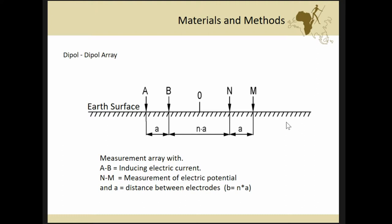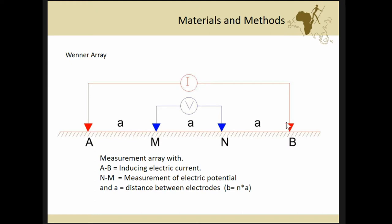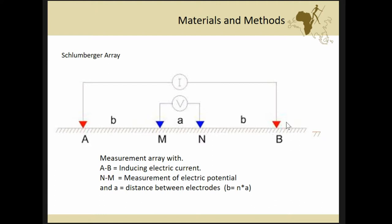So there are different arrays as I said before. So the Dipol-Dipol array is characterized, we have two electrodes where you have the induction of the electric current and you have two electrodes where it is measured. Then the typical Wenner array. You have the inducting electrodes, A and B, external. And then you have internally the receiving electrodes. They have all the same spacing. So that's typical for Wenner array. And then we did also the Schlumberger array. Same setting. Externally the induction and internally the measurement. But the spacing is different. So you have a larger spacing between the inducting and the receiving electrodes.